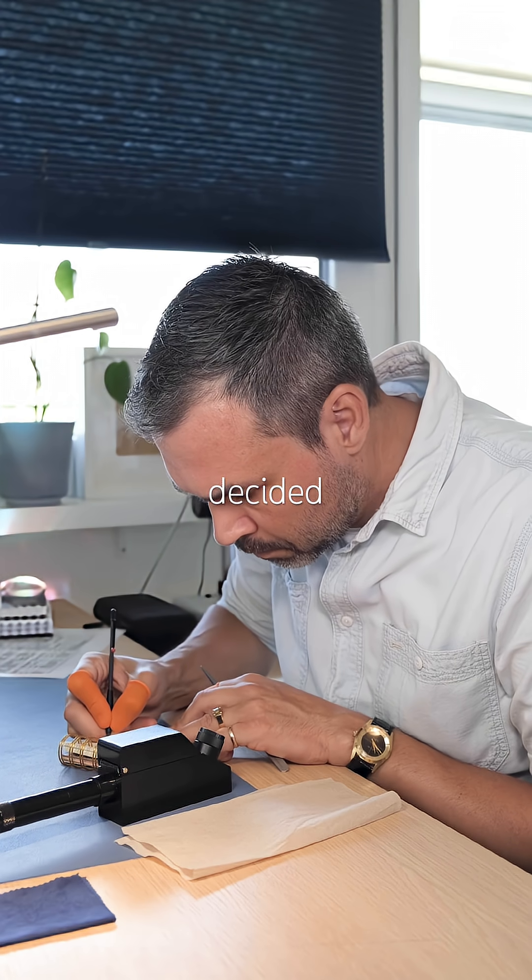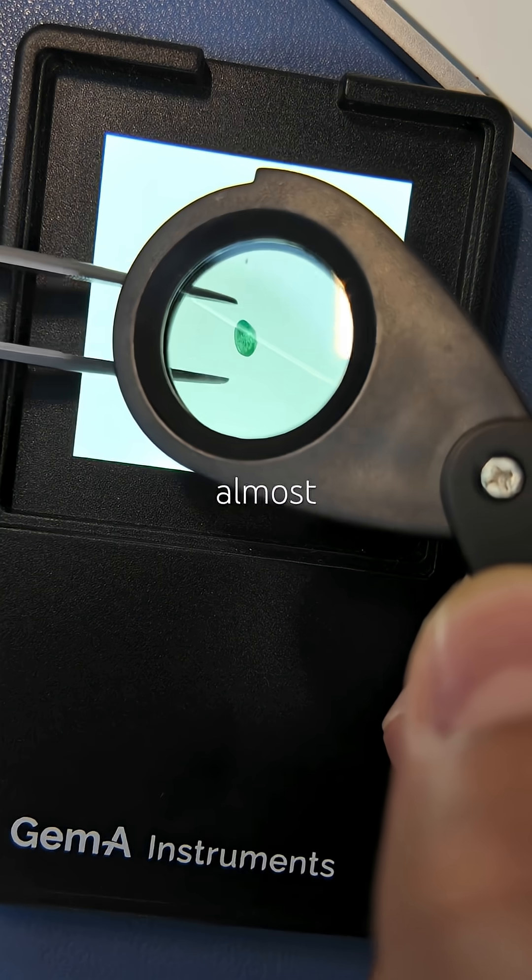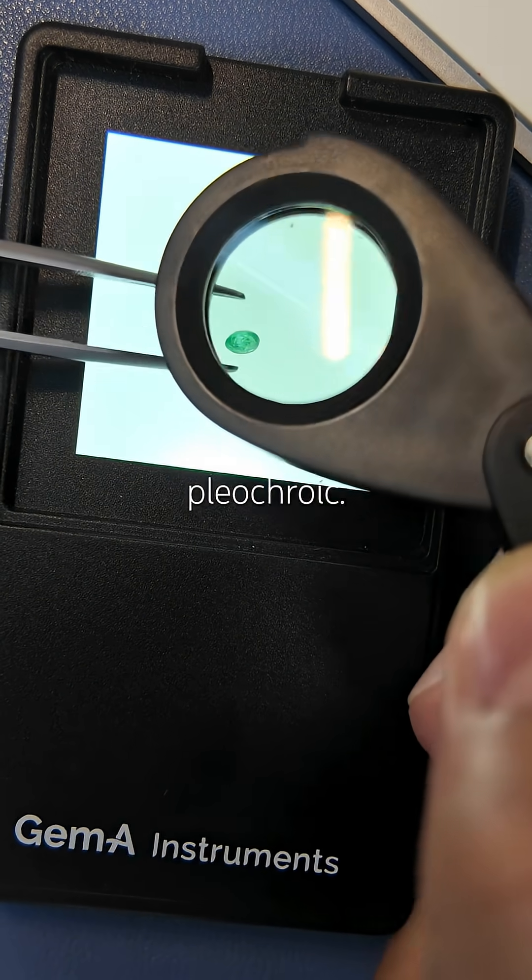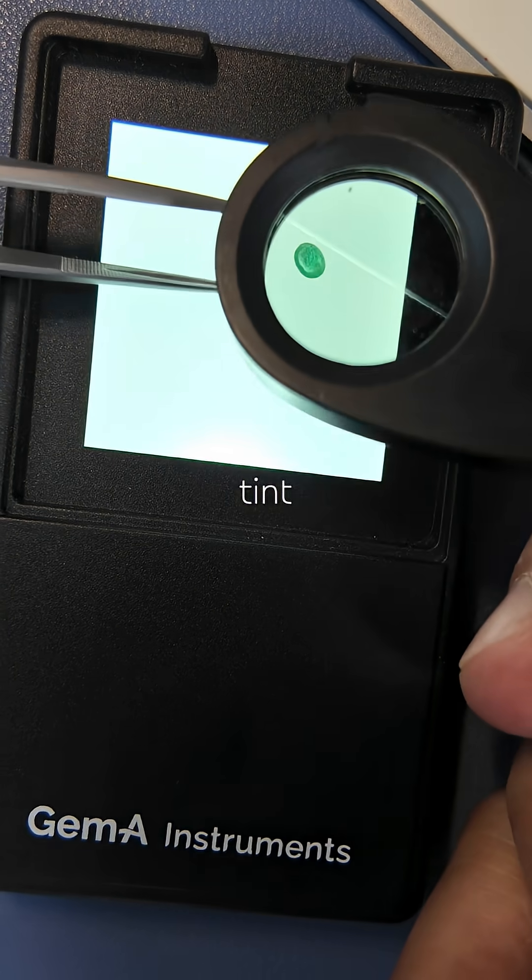Then my camera decided to stop filming, but we're almost done anyway. Under the dichroscope it's very slightly pleochroic. I can see a faint bluish tint.